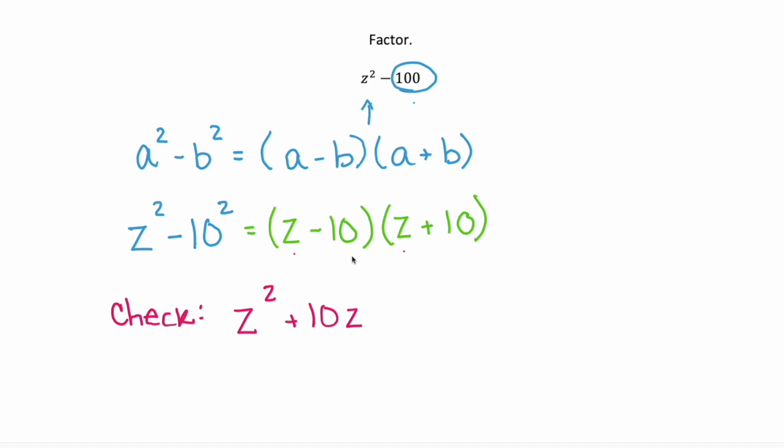Inner is -10z, and last is negative 10 times positive 10, or -100. Notice that these two middle terms cancel each other out, which leaves us with z² - 100, which is the binomial we began with.